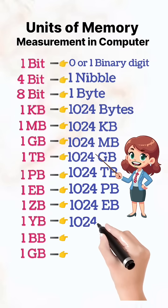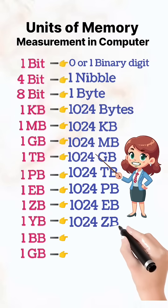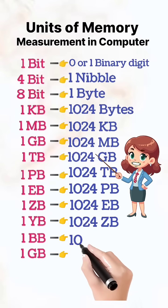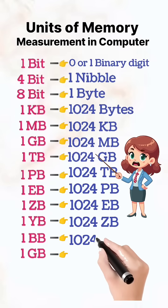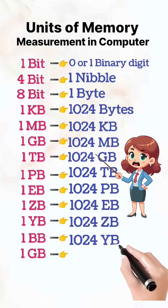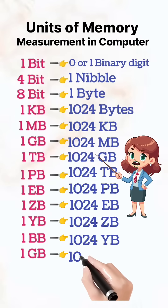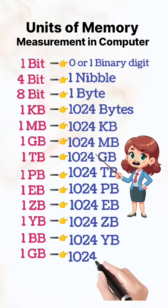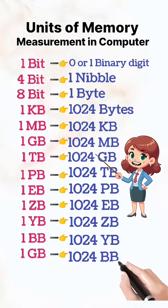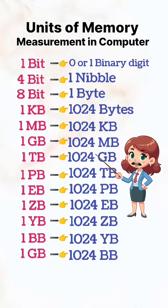1 yottabyte is equal to 1024 zettabytes. 1 brontobyte is equal to 1024 yottabytes. 1 geopbyte (DB) is equal to 1024 brontobytes.